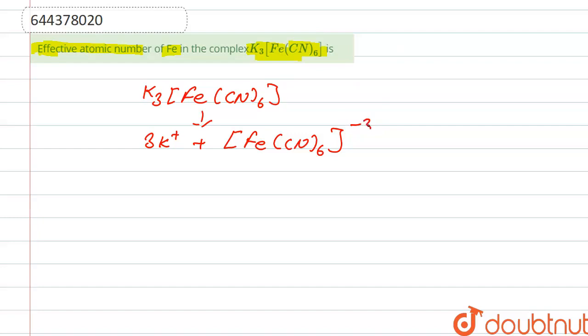So from here we calculate the oxidation number or oxidation state of Fe. So it is x and the oxidation number of CN is -1, so it is -1 into 6, that is -3, so from here